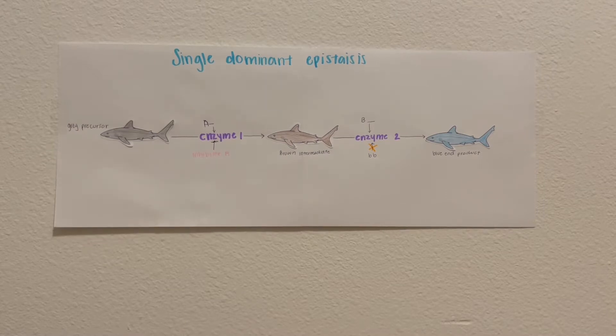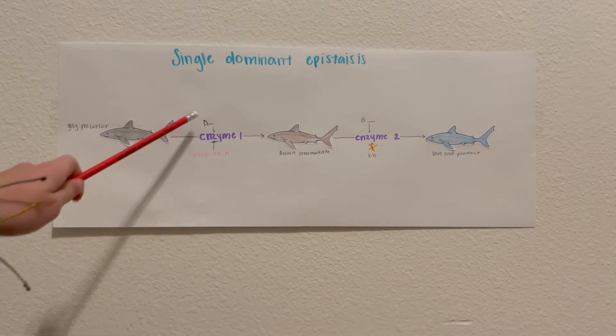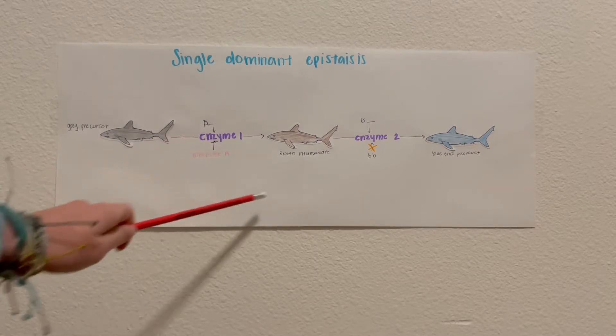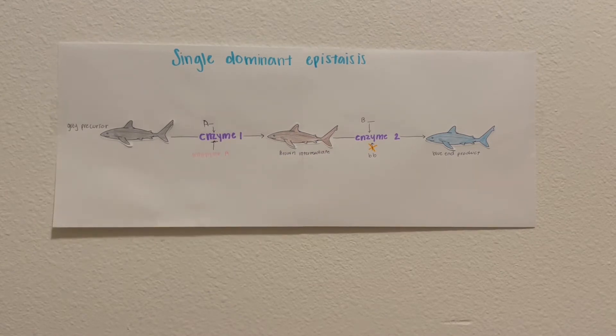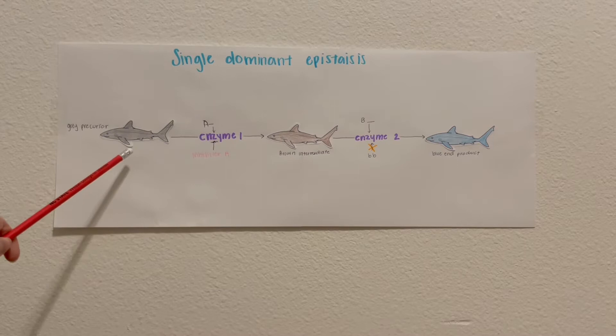So for color in sharks, the capital A is epistatic to B. So having a capital A will result in a gray shark no matter what the B locus is.